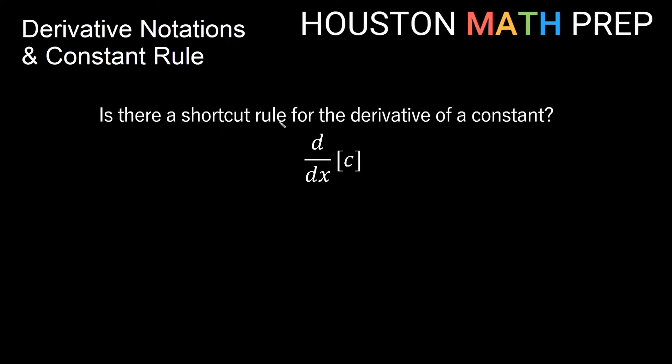So we want to know is there a shortcut rule for taking the derivative with respect to x of just some constant? So basically we're saying my function is just some real number, right, some constant. And we're trying to find if there is a shortcut, is there a formula for finding the derivative for this?